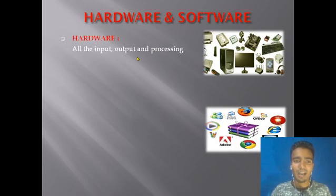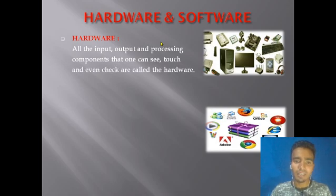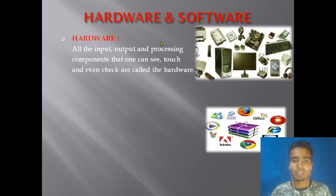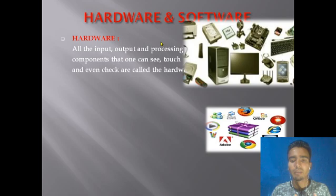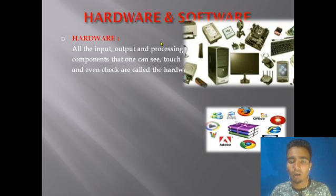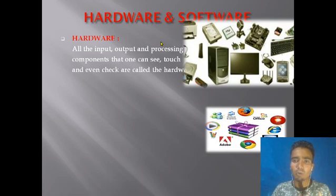Hardware refers to all the input, output, and processing components that one can see, touch, and feel. Hardware covers all the input, output, and processing devices of a computer. Hardware is part of the IPO cycle — IPO means input, processing, output.